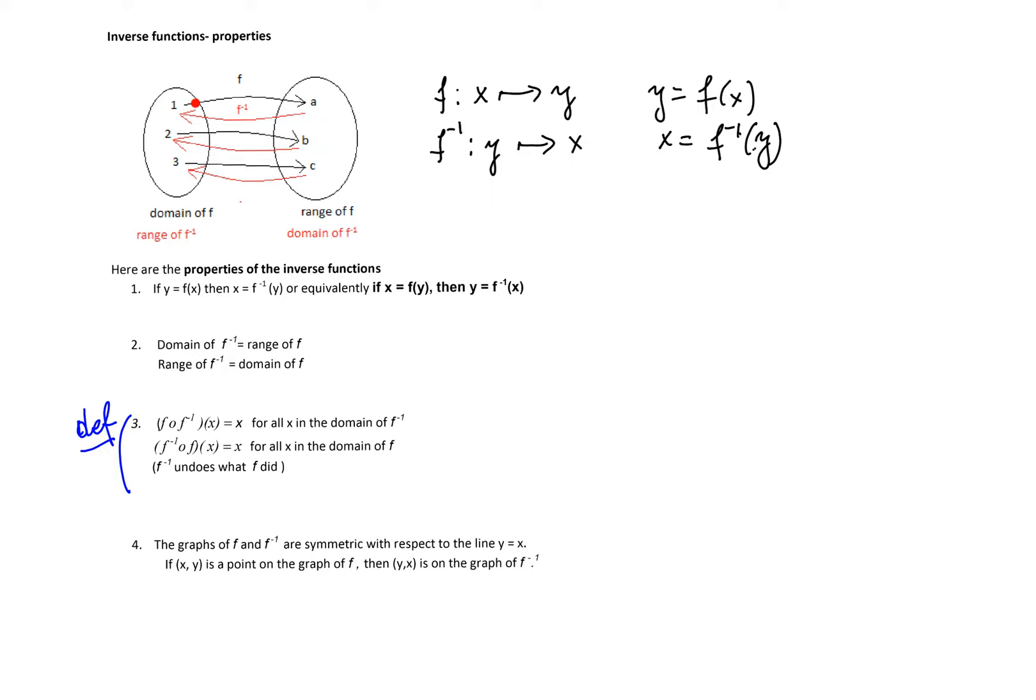If we start with x equal one, function f acts on one and returns as the output a. Function f inverse takes that a and assigns to this the value one. So we have a circle. We start with one and by applying one function after the other we'll get to the same one.